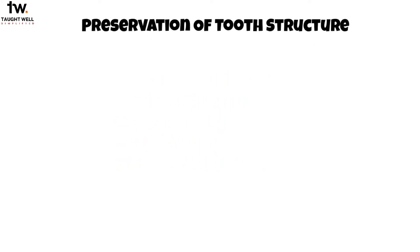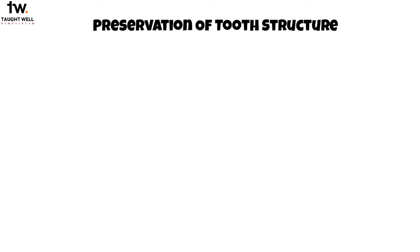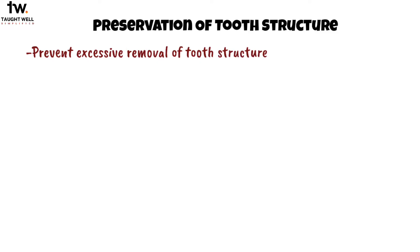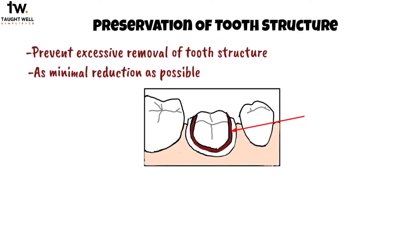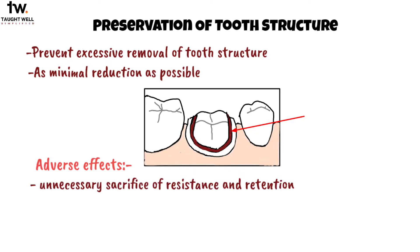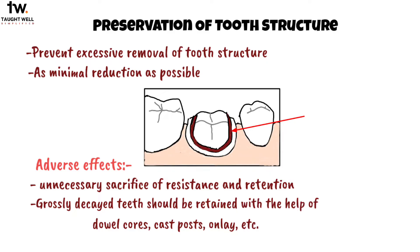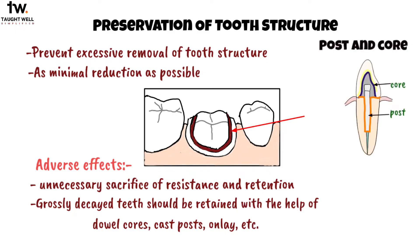The first principle is the preservation of tooth structure. During tooth preparation, care should be taken to prevent excessive removal of tooth structure. There should be as minimal reduction as possible done to obtain the required characteristics, because excessive removal of tooth structure has many adverse effects. If a tooth is overtapered or shortened too much, there will be an unnecessary sacrifice of retention and resistance. Grossly decayed teeth should be retained with the help of dowel cores, cast posts, onlays, etc.